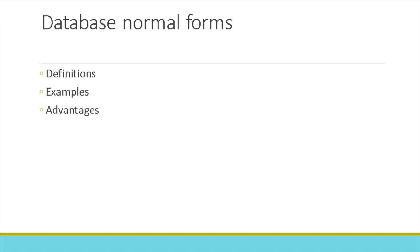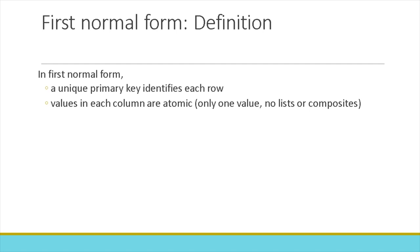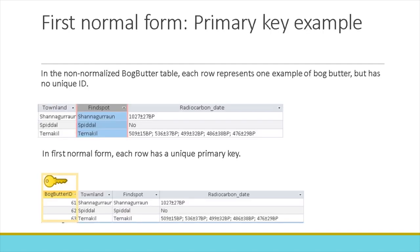First normal form — again the definition: a unique primary key identifies each row, and the values in each column are atomic. In the non-normalized bog-butter table, each row represents one example of bog-butter but has no unique ID. In first normal form, each row has a unique primary key. If we simply add the primary key, we're already in first normal form.